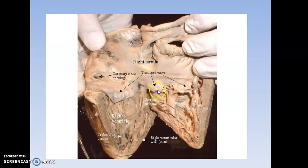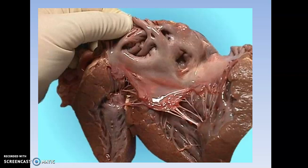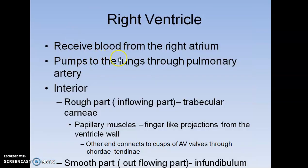Here is the tricuspid valve, denoted on the wall. Here is the coronary sinus. This is the structure of the right ventricular wall. The left atrium has external extensions to pulmonary veins on the posterior side. It receives oxygenated blood from the lungs, which then passes to the left ventricle via the left atrioventricular valve. The right ventricle receives blood from the right atrium and sends it to the lungs via the pulmonary arteries.